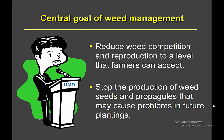The central goal of weed management is to reduce weed competition and reproduction to a level that farmers can accept. Farmers have different tolerance levels — an organic farmer may look at a weedy field and say it isn't bad. Another goal is to stop production of weed seeds and propagules that may cause future problems. This differentiates weed control from weed management. Weed control is suppressing the weed in front of you; weed management means thinking about future weed problems and attacking the weak links of those particular weeds.